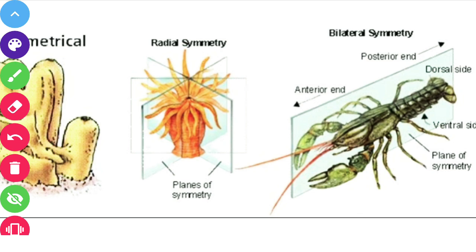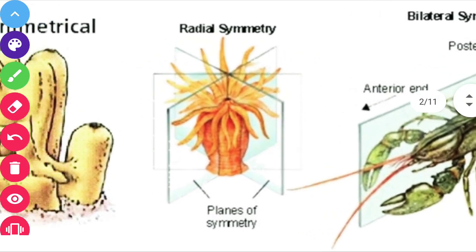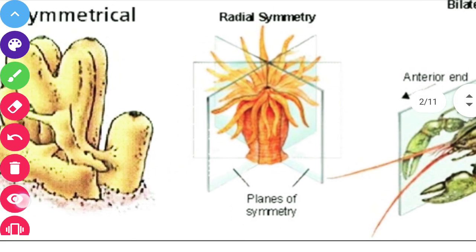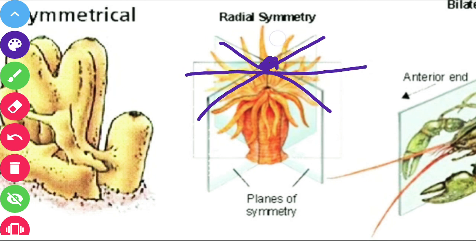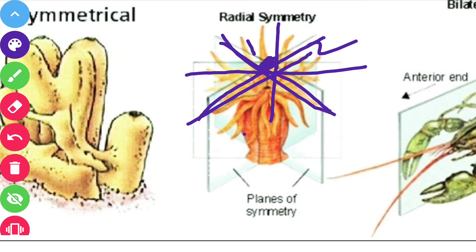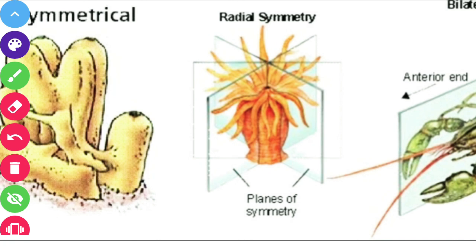Coming to radial symmetry — this is the radial symmetry which cnidarians have. Cnidarians, ctenophores, even hydra — they have radial symmetry. Radial symmetry means if any plane passes through the central principal axis, the animal is divided into equal halves from any plane. This is known as radial symmetry.